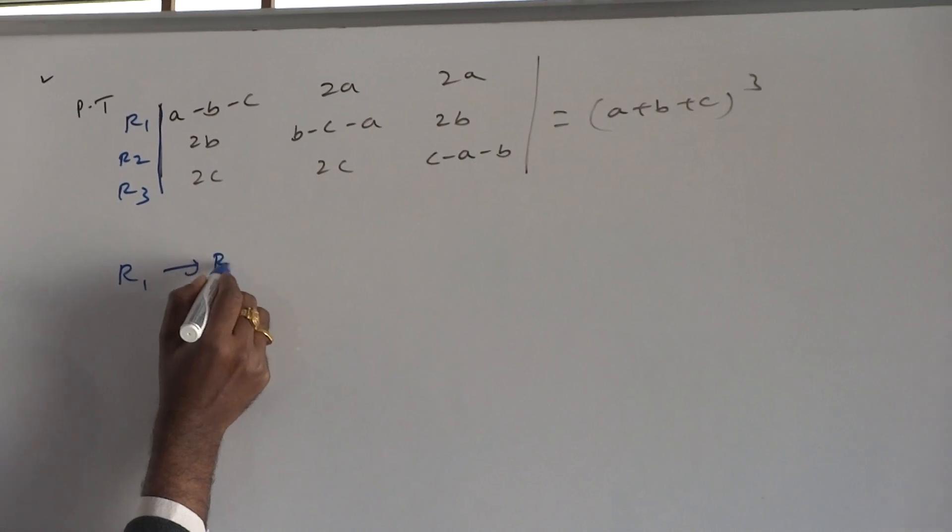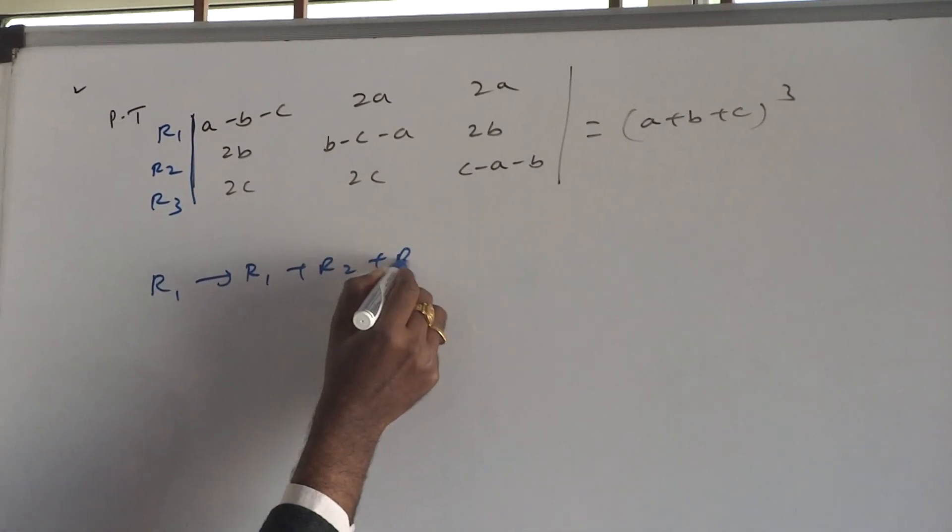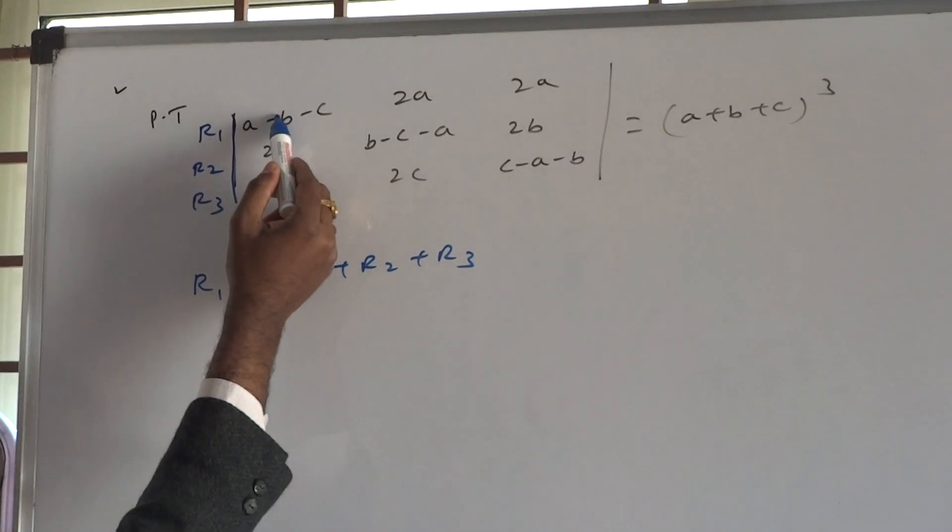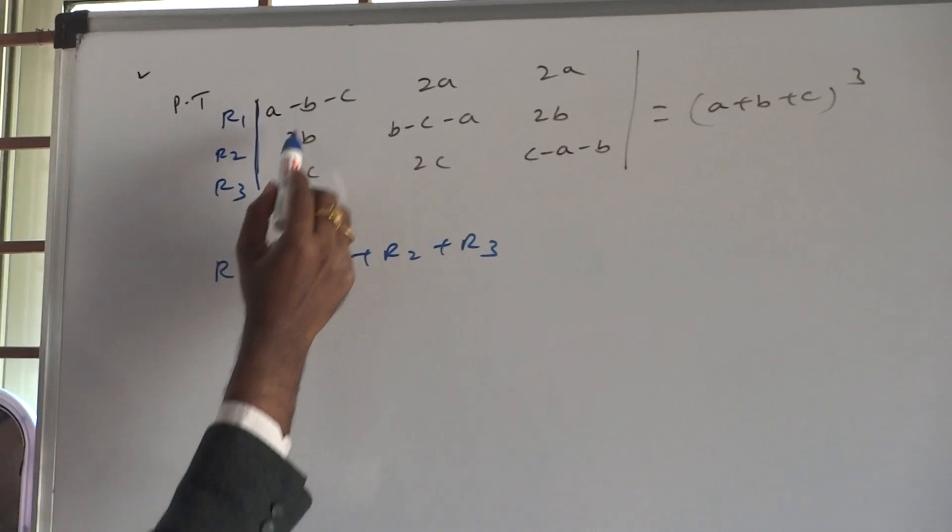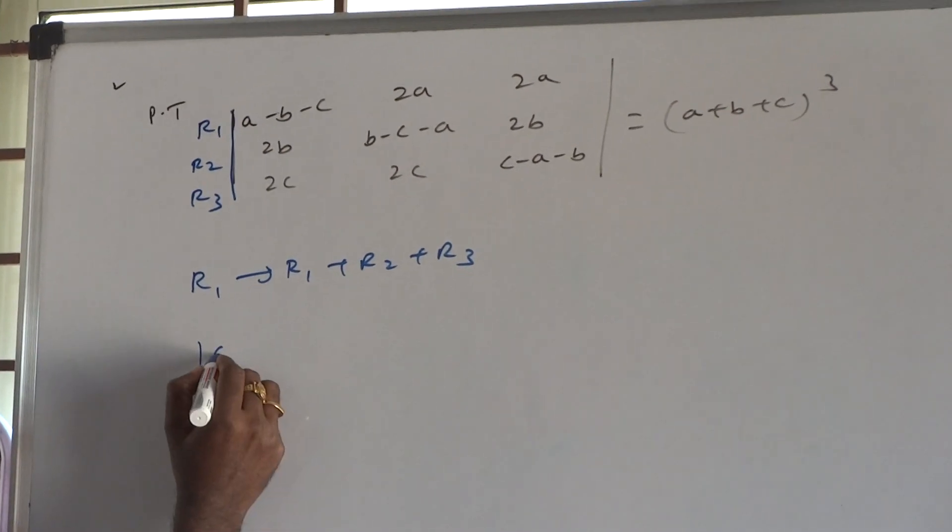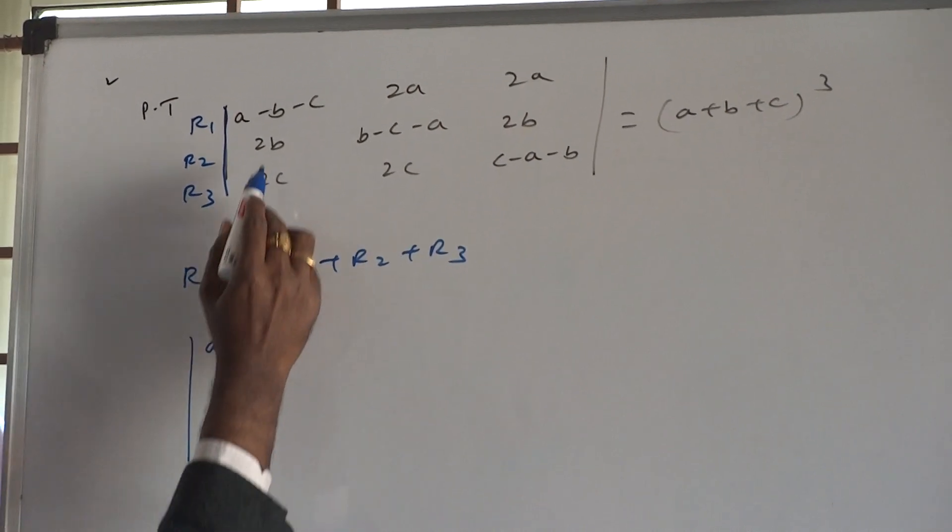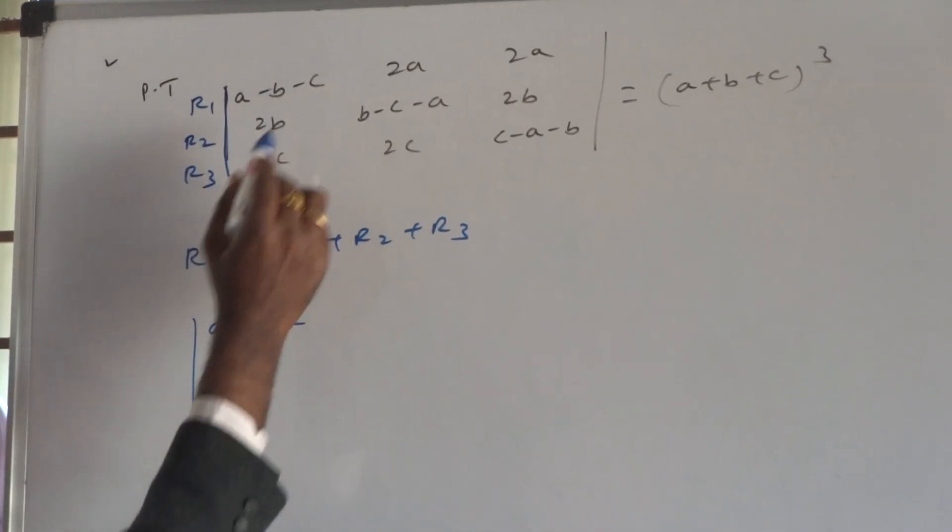R1 implies R1 plus R2 plus R3. This row 1 first element, row 2 first element, row 3 first element. If you add all these three, what you will get? A plus B plus C. Because 2B minus B is B, 2C minus C is C.